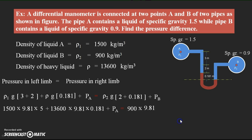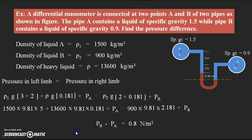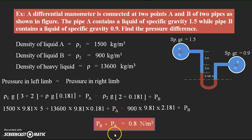Substituting the values: 1500 × 9.81 × 5 + 13600 × 9.81 × 0.181 + PA = 900 × 9.81 × 2.181 + PB. Rearranging, PB − PA = (1500×9.81×5 + 13600×9.81×0.181) − (900×9.81×2.181). Solving this gives PB − PA = 0.8 N/m², which is the pressure difference between the two pipes. This is the answer to the problem.